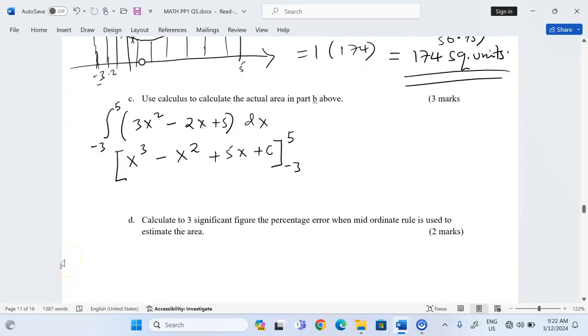Then we're integrating from negative 3 to 5. Because it is a definite integral, we must get the specific value. Therefore, we will start with 5 power 3 minus 5 squared plus 5 into 5 plus C minus, when we use negative 3 now, negative 3 cubed minus negative 3 squared plus 5 into negative 3 plus a constant.